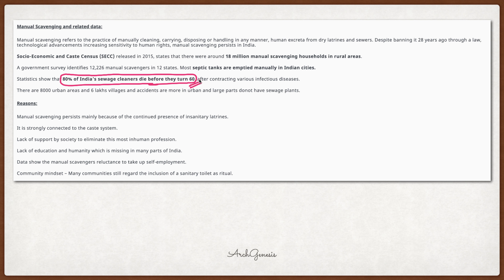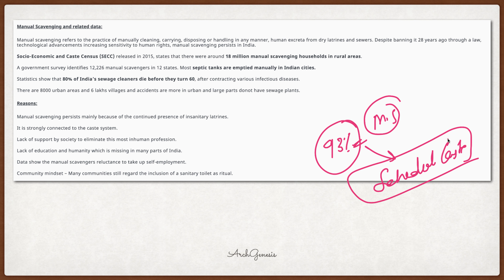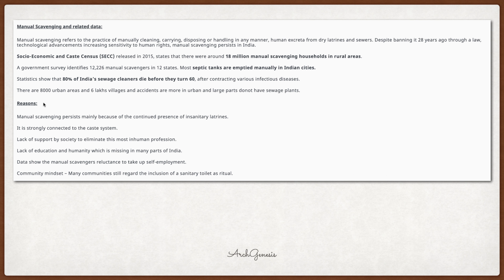If you talk about the population of India, the average lifespan in this profession is about 15-20 years. Why? Because of diseases. About 93% of these workers belong to the scheduled caste community. We should understand why we provide facilities for marginalized communities like SC/STs — because they have historically been ignored.